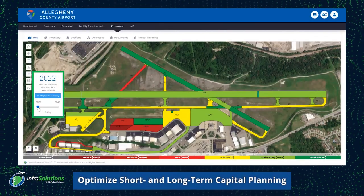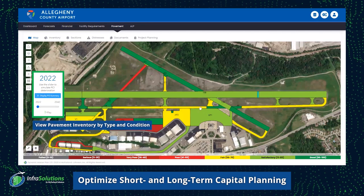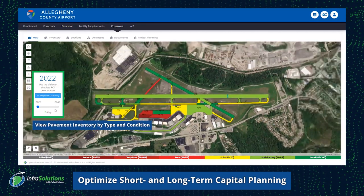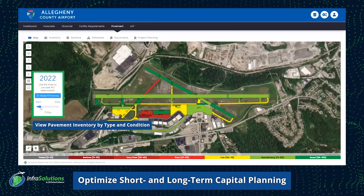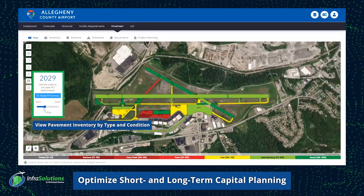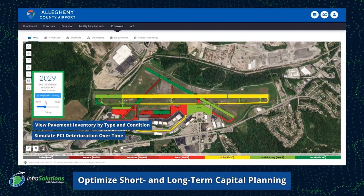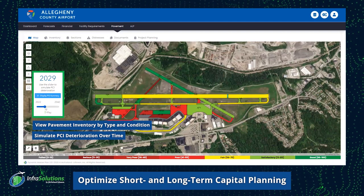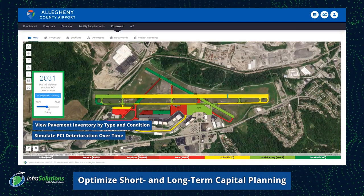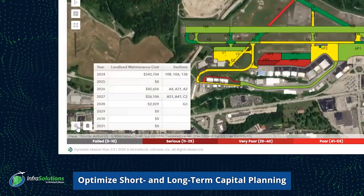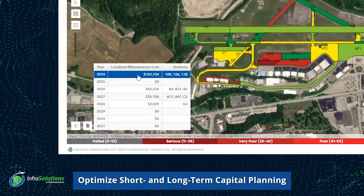Our program has a customizable pavement inventory of runway, surface area, taxiways, and aprons, and will display the current as well as historical PCI value data.